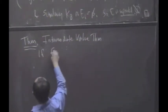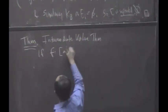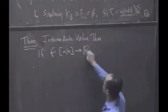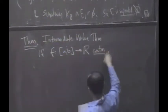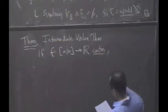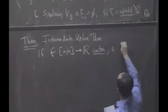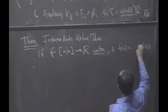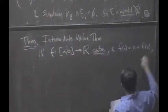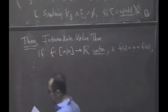It says if you're dealing with a function on the interval going into R, that's continuous, and let's suppose the image of the endpoints, there's a point in between the image of the endpoints, C lives between F(A) and F(B).